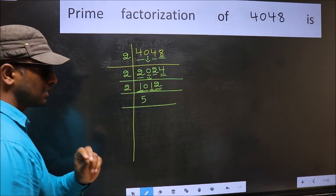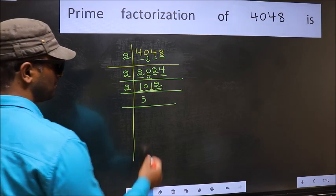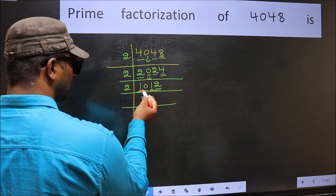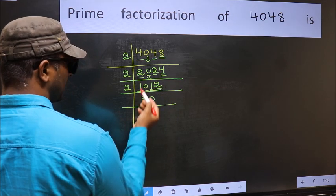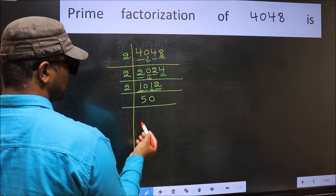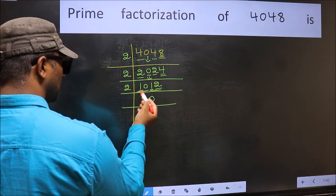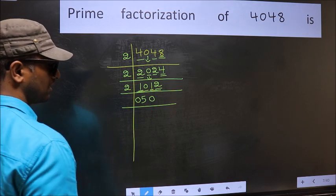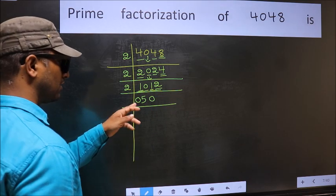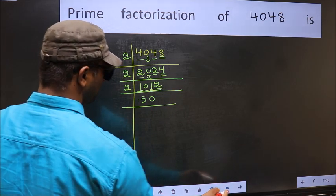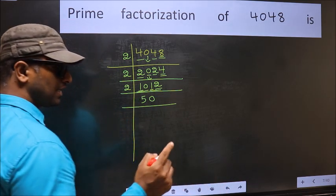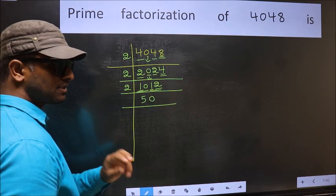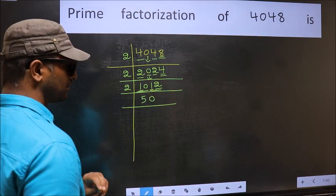Remember, whenever you are taking 2 numbers, compulsory put 0. Even over here also we had taken 2 numbers, but 0 at the start does not count, so no need to write 0 at the start. Anywhere else you are taking 2 numbers, compulsory put 0.